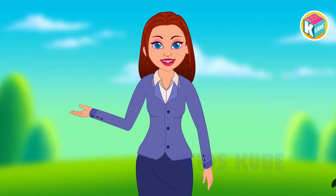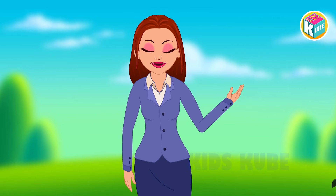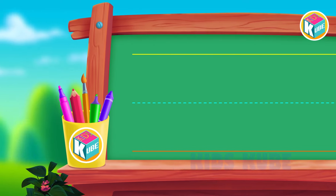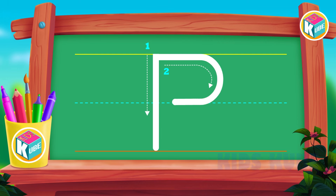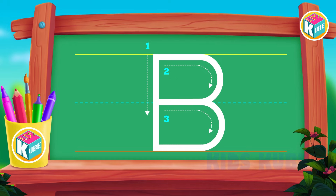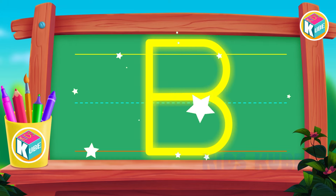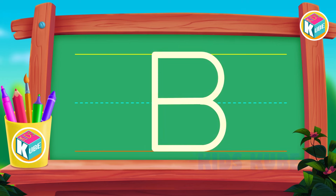Now we will learn the capital letter B. First, draw a straight line from the first line to the third line. Second, draw from the top curve forward and slide left. Third, draw curve forward and slide left. Wow, this is the capital letter B.